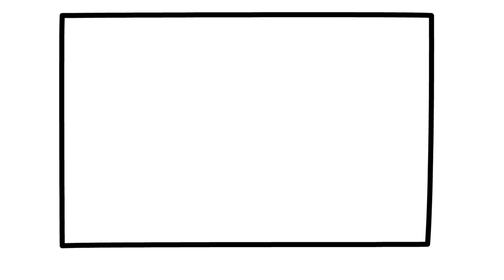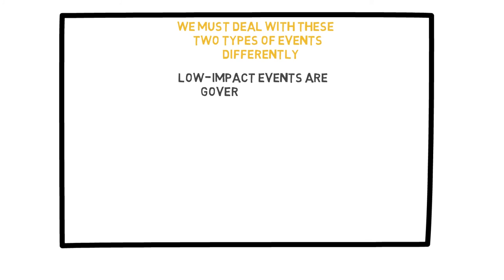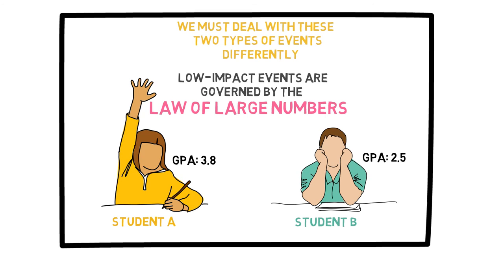The reason for having high-impact and low-impact categories is that we should treat them differently. The overall effect of low-impact decisions is governed by the law of large numbers. For example, suppose there are two college students, A and B. Student A studies all the time and puts a lot of effort into her work, whereas student B does not. While there may be some tests where student B does better or they both do poorly, at the end of four years student A will have a higher GPA due to the sheer number of tests taken. GPA is a perfect example of the accumulative impact of small events, and the law of large numbers governs the situation. In the long run, students' GPAs will reflect their average amounts of effort.